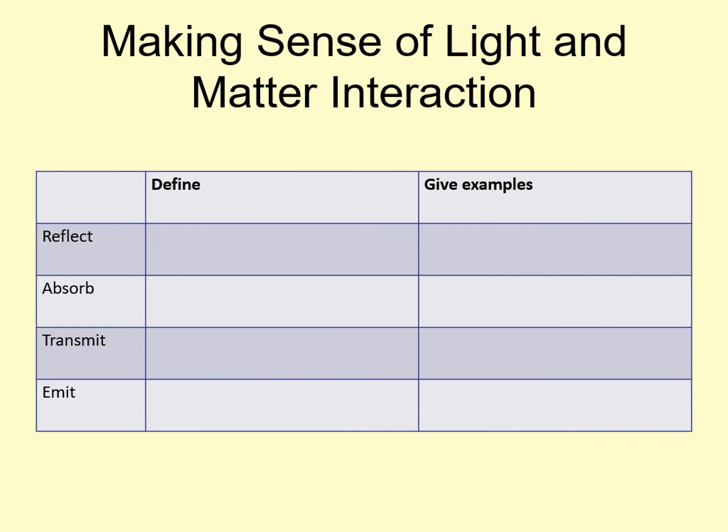Here's a table to fill in to remind yourself of the four major ways that light and matter interact. See if you can define each one without just relying on the name of the interaction. Also, come up with some examples, but leave room so that you can add others as you learn about them later in the course.